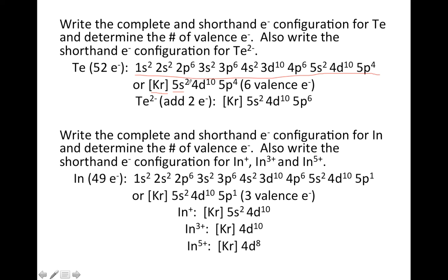Kr has 36 electrons, so I need 16 more. I just keep filling in the order, and I'll end in 5p⁴, and that will give me my extra 16 electrons. In terms of valence electrons, principal quantum number of 5 here and here, so I'm going to add those together to get 6 valence electrons. Then if I'm doing Te²⁻, I've got to add two electrons to the neutral configuration. So I simply take what I wrote for Te and change the 4 to a 6 at the very end to recognize the extra 2 electrons.